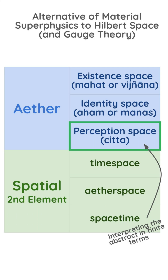Our alternative to both Hilbert space and gauge theory is the perception space, which is called chitta in Asian physics.